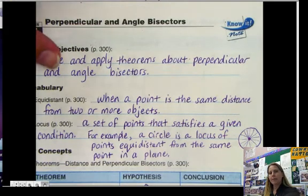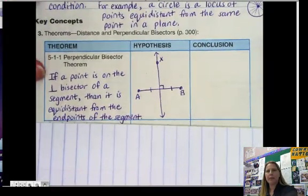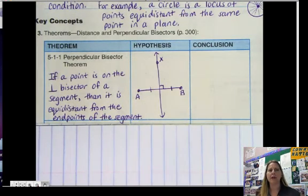So a couple of theorems. First of all, the perpendicular bisector theorem states that if a point is on the perpendicular bisector of a segment, then it is equidistant from the endpoints of the segment.